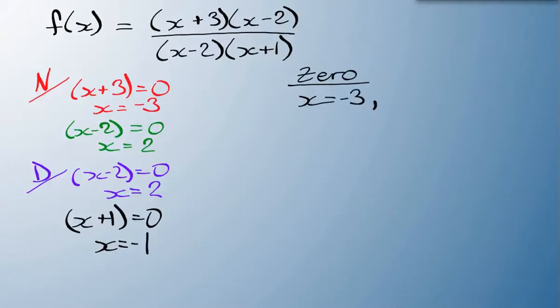And whenever x, okay, it's going to be zero whenever x equals minus 3. Now I know x minus 2 also will give you zero, but there's also one on the bottom. So we're saving that one for later.